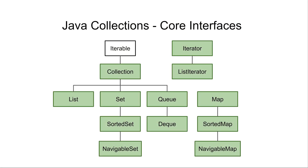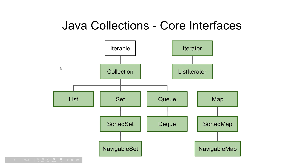The Java Collections API contains classes and interfaces that make it easier for you to work with collections of objects in Java. In this diagram I have listed the core interfaces of the Java Collections API — in other words, the most commonly used interfaces. This video is part of a playlist of videos about the Java Collections API, and the later videos will have a lot more detail about each of these interfaces. So in this video I will only concentrate on giving you an overview of the interfaces.